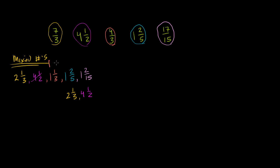We can rewrite each with denominator 15. For 1 and 1/3: multiply numerator and denominator by 5 to get 1 and 5/15. For 1 and 2/5: multiply by 3 to get 1 and 6/15. And 1 and 2/15 already has 15 as the denominator. Now it's easy to compare: the smallest is 2/15, giving us 1 and 2/15; next is 1 and 5/15, which is 1 and 1/3; then 1 and 6/15, which is 1 and 2/5.